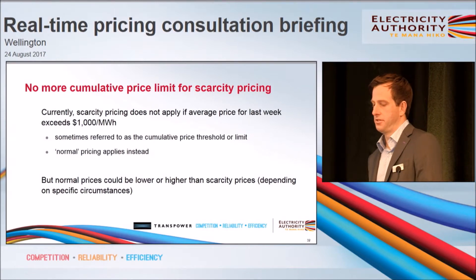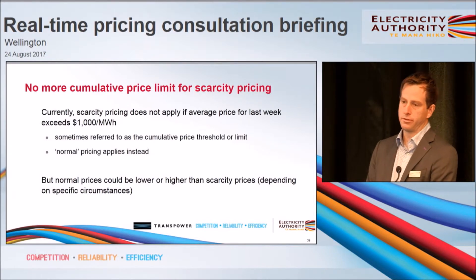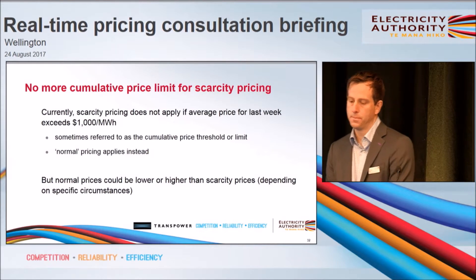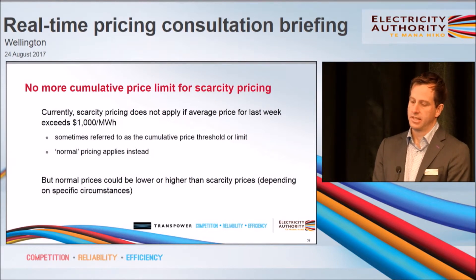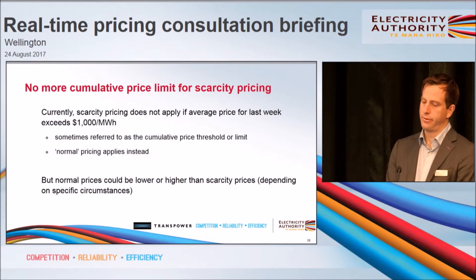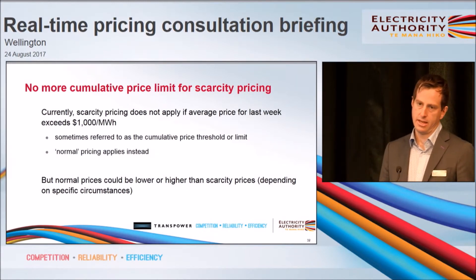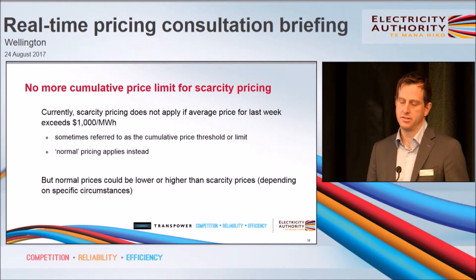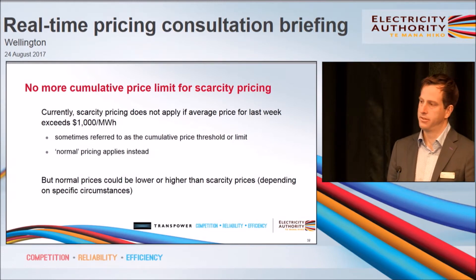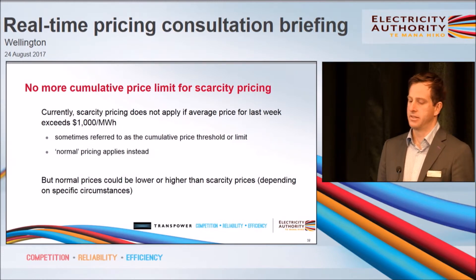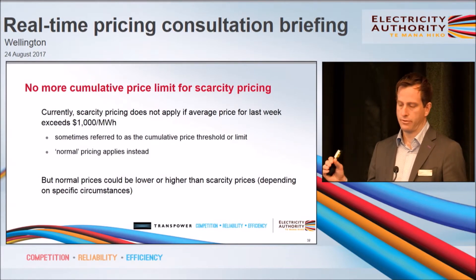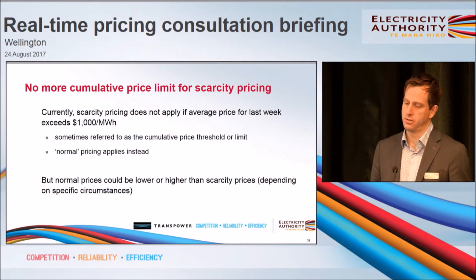Switching back just to scarcity pricing itself, this is one of those things we don't believe is necessary any longer. Today there's a cumulative price limit or a price threshold which in simple terms says that scarcity pricing stops if the average price for the preceding week exceeds $1,000 a megawatt hour. In that event, normal pricing applies instead. But it's important to understand that this limit does not act as an upper bound or maximum on the spot price you could pay, because these normal prices could be lower or they could be higher than scarcity prices, including that $20,000, which would depend on the specific circumstances.